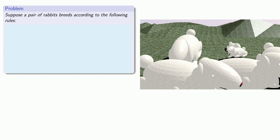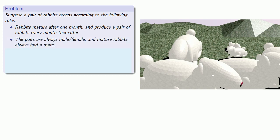So we'll make the following assumptions. First, we'll assume that rabbits mature after one month, and they produce a pair of rabbits every month thereafter. We'll also assume that the pairs are always a male and female rabbit, and that mature rabbits always find a mate. And finally, we'll assume that no rabbits die.